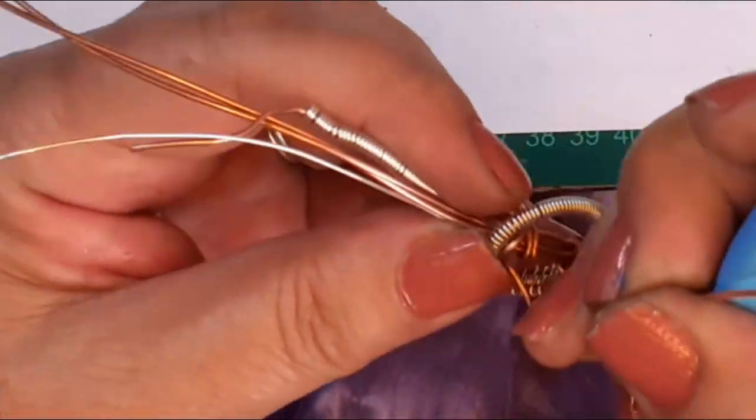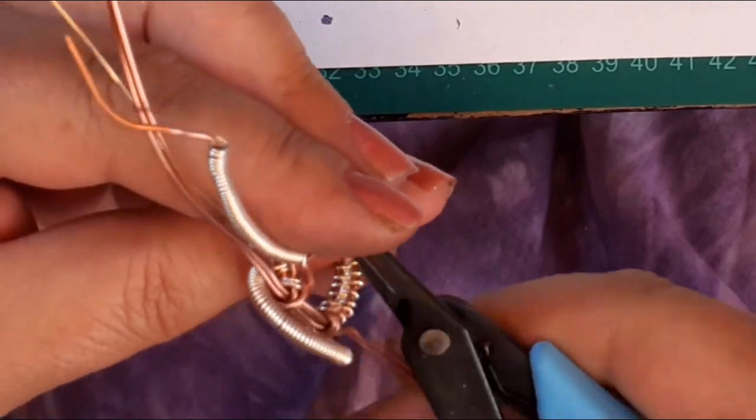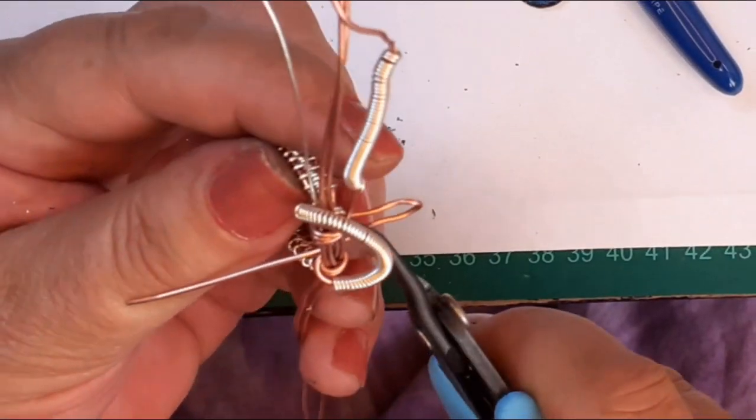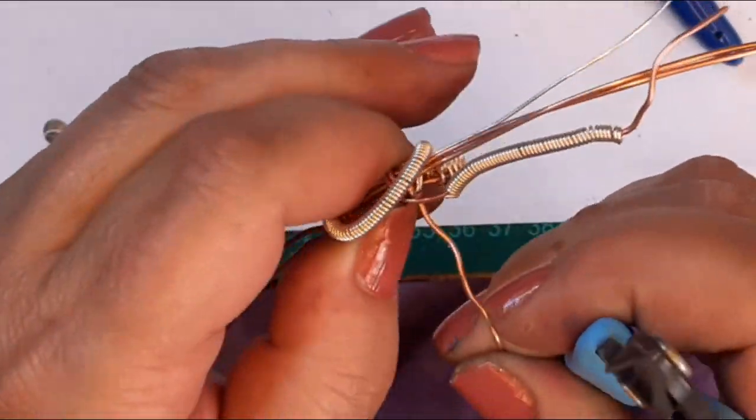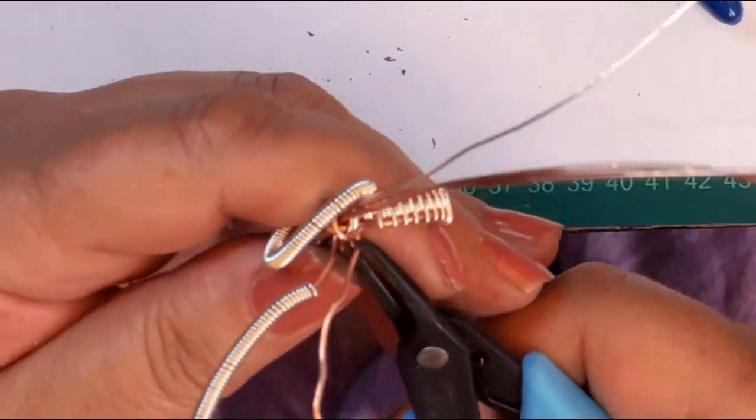So pull it nice and firmly. Use your thin nose pliers makes it a lot easier. Wrap it around about twice and cut the wire on top so it's not underneath so it doesn't catch the finger.